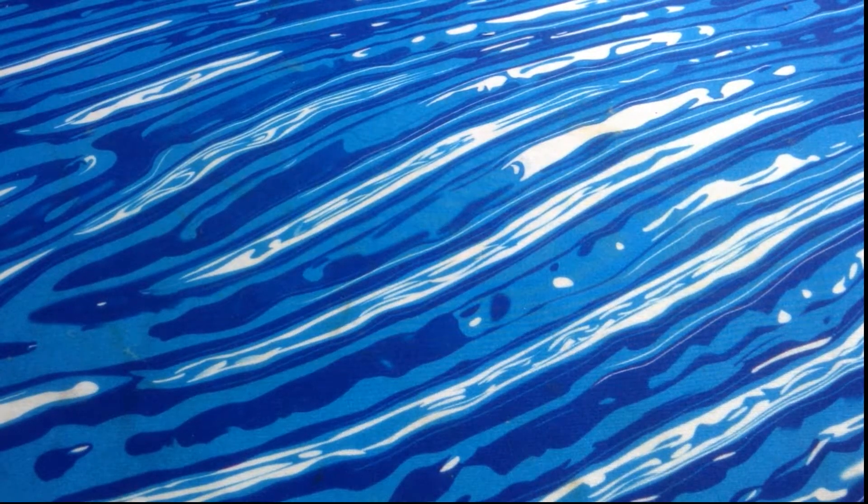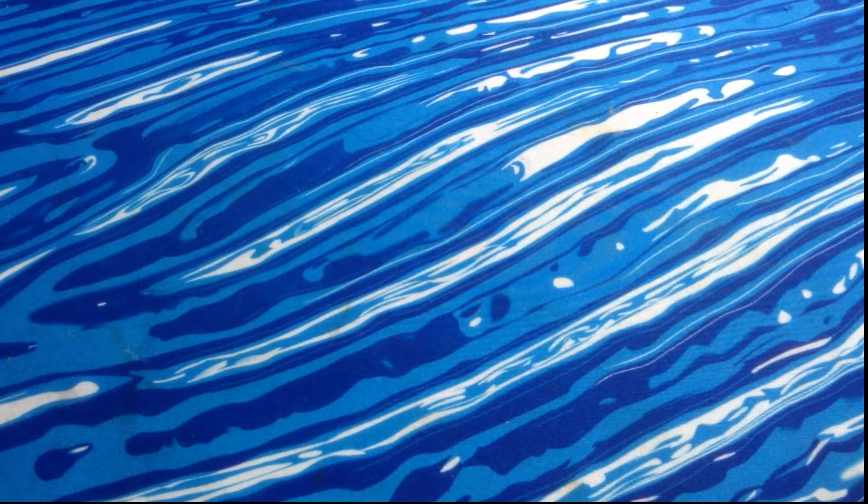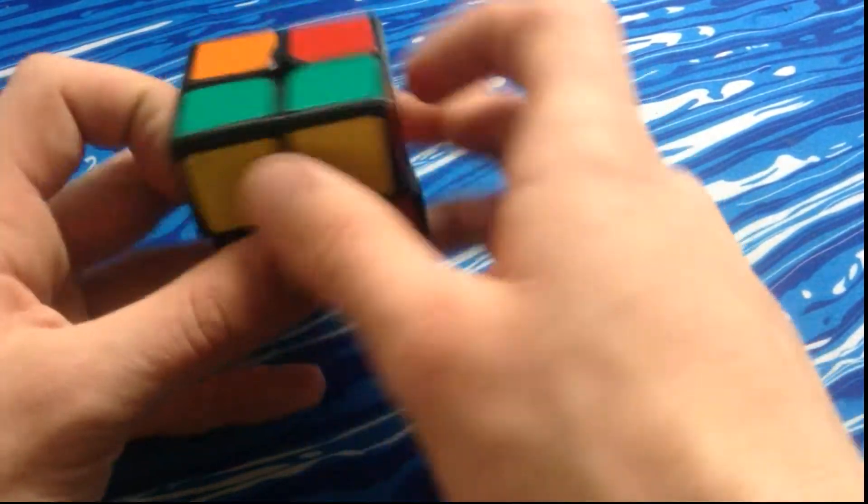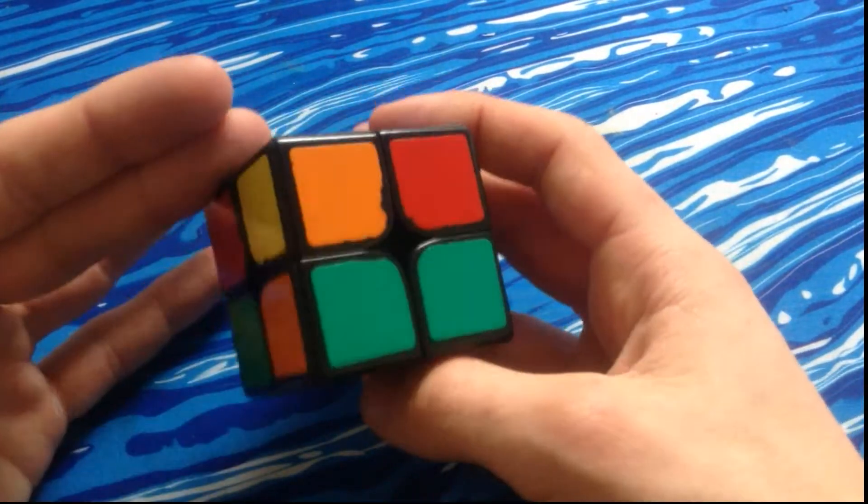In this video, I shall be showing some easy EG1 algorithms. The first case is this Pi, which is I think the shortest EG1. I think it's six moves and the quickest and easiest in my opinion. It's also the first one I learned.